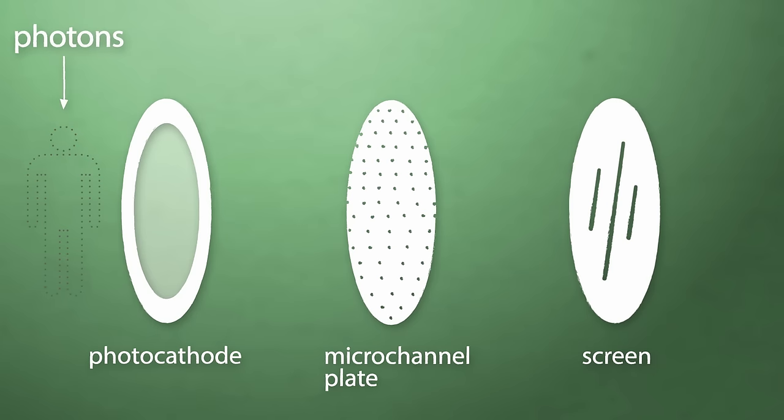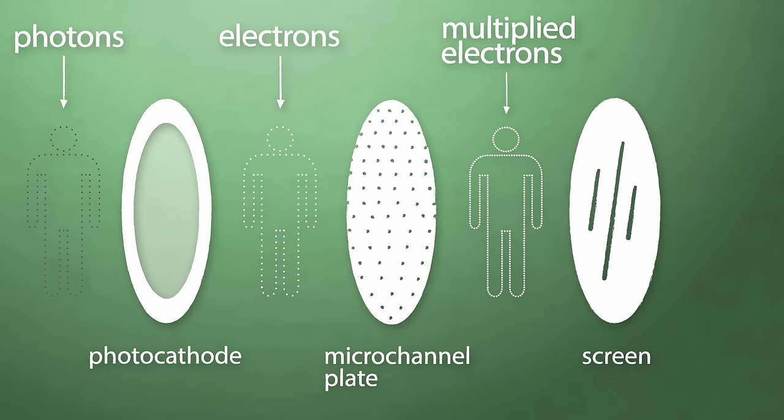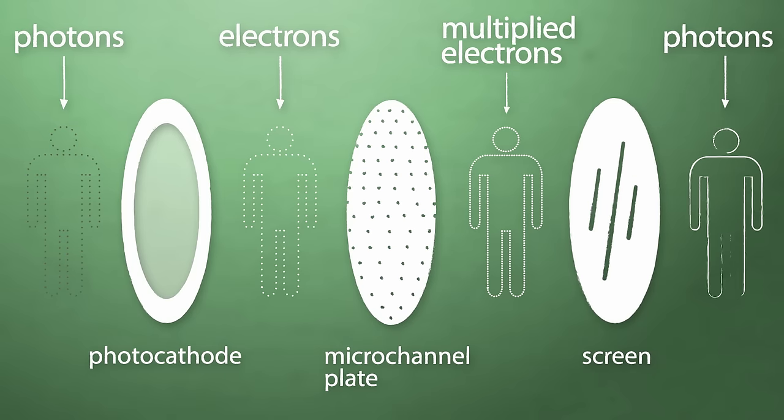Here's the crazy part. These electrons maintain their position in relation to the microchannel they passed through, which provides a perfect image since the electrons stay in the same alignment as the original photons. When they hit the screen, their energy excites the phosphors, releasing photons. Those phosphors create that green image you see when you look through a night vision scope.